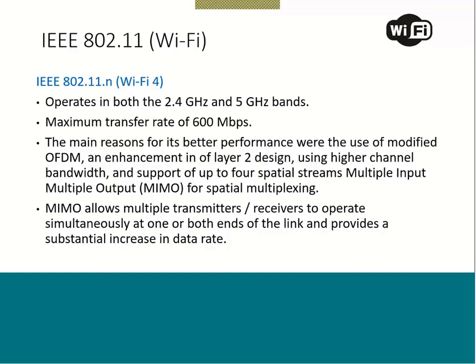We also discussed Wi-Fi, which has existed for a long time. One of its best features is that it operates in unlicensed spectrum and has a very high data rate. We covered standards A, B, G, N — and N, which is in front of you on this slide, operates at around 600 Mbps. That is where we left off last session.